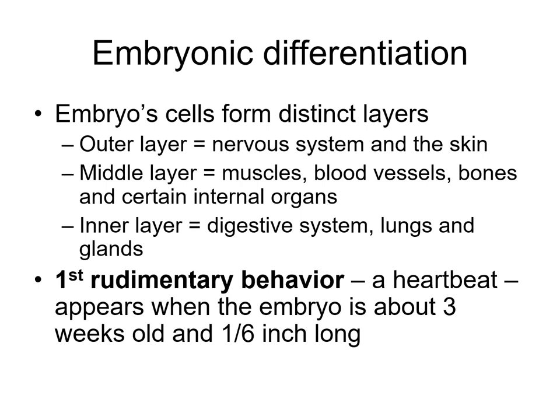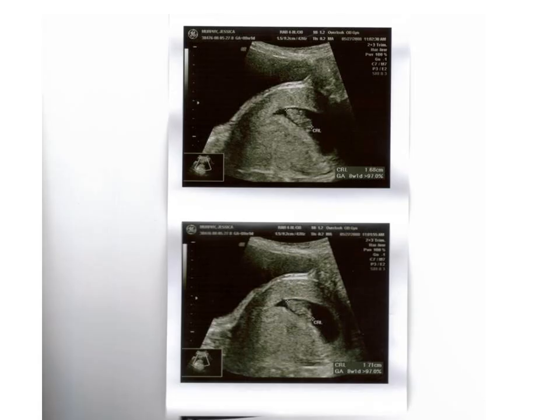At three weeks old, a sixth of an inch long, you can hear a heartbeat — a human heartbeat at just three weeks old. This is an ultrasound of my daughter Mia when I was eight weeks pregnant. We were anticipating and very excited about this pregnancy. That little mass in the center — I'll even circle it — that would be my daughter. They do a crown-to-rump measurement to let the doctor know whether development is progressing properly. At eight weeks we couldn't tell if we were having a daughter or a son, but we could see her heartbeat and we could see her move.